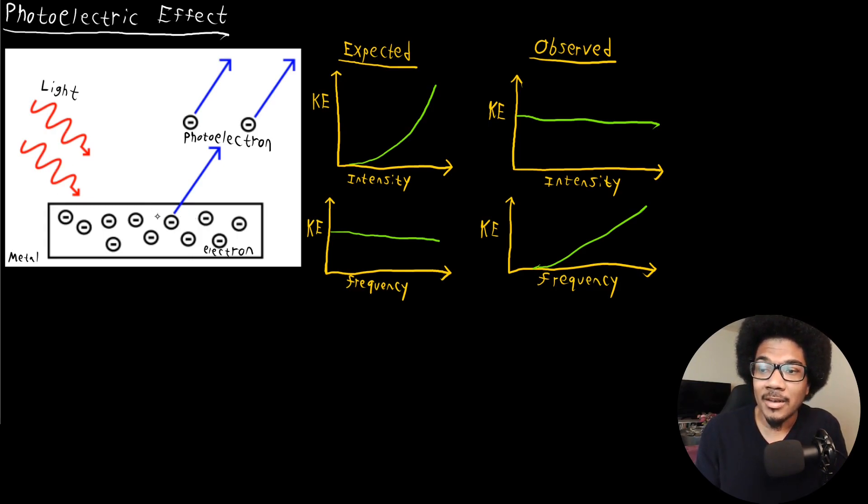As the light comes in, what can be observed is that if you come in with the right type of light, then you can actually eject electrons from that metal surface. That ejected electron is known as a photoelectron.